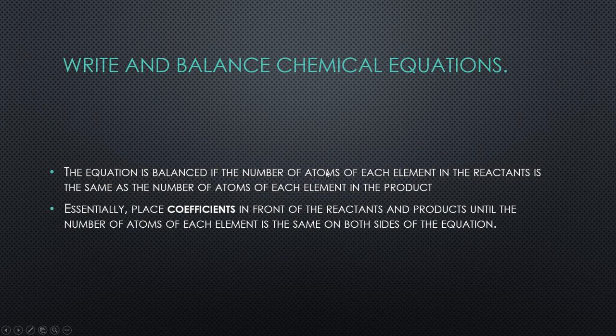So what does this mean and how does it apply to balancing of equations? The equation will be balanced if the number of atoms of each element in the reactants is equal to the same number of atoms of the products. Once you have the right equation down, you just have to place coefficients in front of the reactants and the products until the number of atoms of each element are the same on both sides of the equation. We'll do a few examples now to illustrate this.